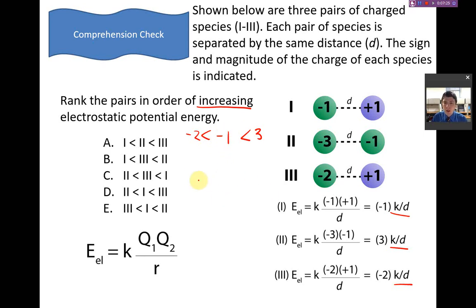That puts us then with negative 1 in the middle. So, if we were to rank those, negative 2 corresponds to number 3. Negative 1 corresponds to number 1. And positive 3 corresponds to set number 2. That gets us then an answer of E.